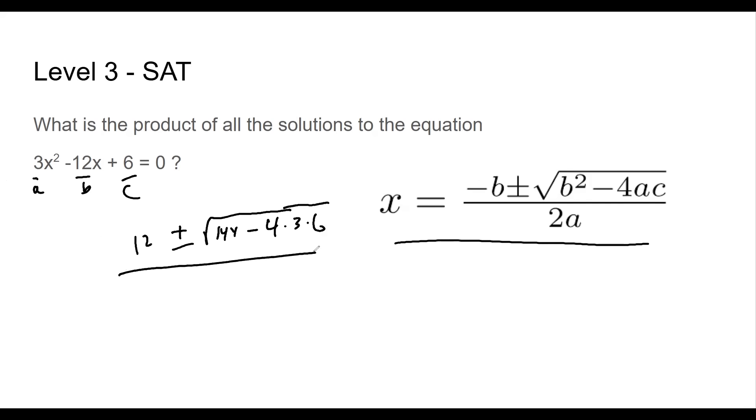All right, all over 2a. So 2 times a, which is 3. All right, now I'm going to simplify this. That's 12 plus or minus the square root of 144 minus 4 times 3 is 12. 12 times 6 is 60 plus 12, 72. All over 6.